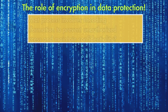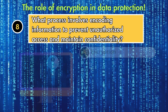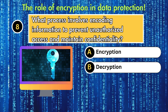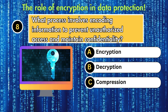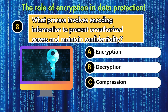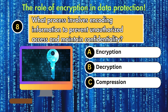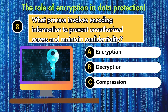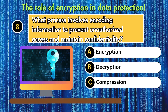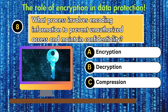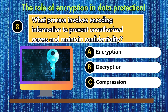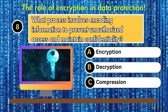What process involves encoding information to prevent unauthorized access and maintain confidentiality? Option 1: encryption. Option 2: decryption. Option 3: compression. Answer is encryption.